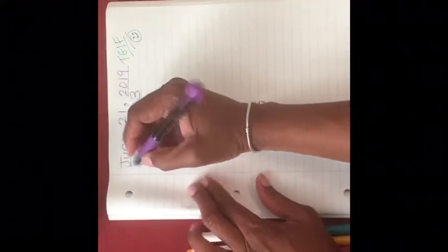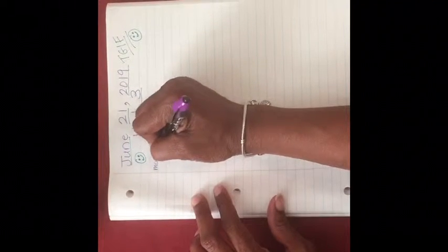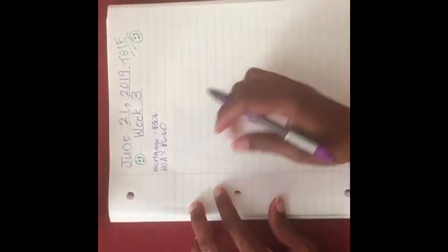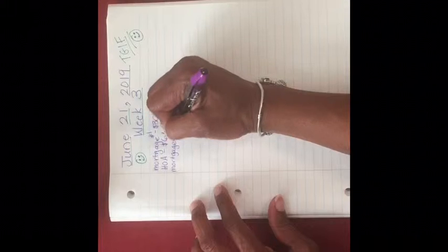This is week three. So we are going to start out with the mortgage. I set aside $306 for my mortgage. The HOA, which is my homeowners association fees, I set aside $6.60. Mortgage number two or my second mortgage. This is considered the first mortgage. Mortgage number two.